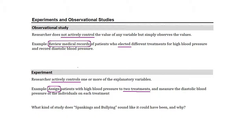Looking back at the spankings and bullying example, we didn't have a lot of information about how the study was conducted, but we can think about how it would be done as an observational study versus an experiment. As an observational study, we might conduct an anonymous survey of parents of teens, asking if they spanked when the child was younger and about current bullying behavior — possibly asking counselors as well.